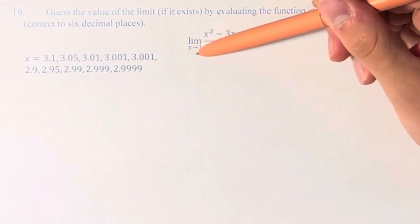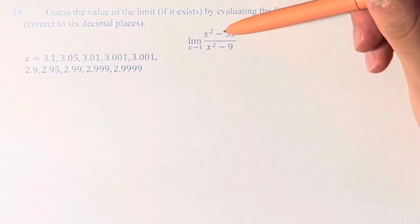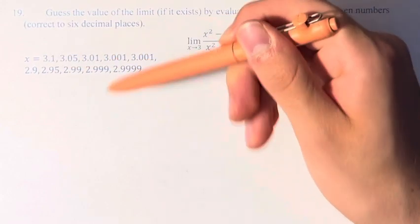So we have the limit as x approaches 3 of x squared minus 3x over x squared minus 9. So we have to evaluate this fraction at these various values.